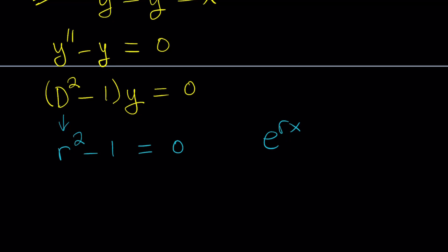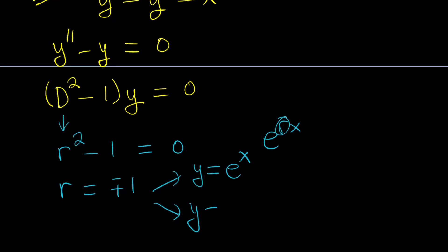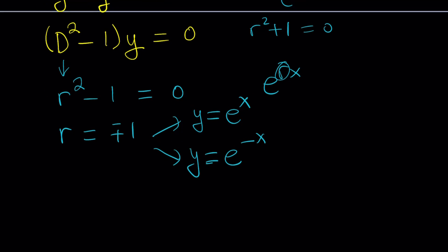We get two r values: r equals plus or minus one, giving two particular solutions — y equals e to the x, and y equals e to the negative x. As a side note, if you get complex solutions, such as from r squared plus one equals zero, you would get something like e to the power ix, and using Euler's formula you could turn that into cosine and sine — so the complex case will be trigonometric.